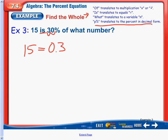We get 3 tenths of, means multiplication. And what number tells us we have a variable n.